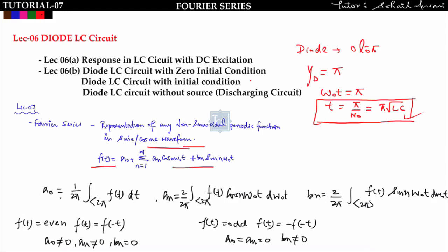The coefficients are given as: a_naught = (1/2π) × integral over 2π of f(t) dt; a_n = (2/2π) × integral over 2π of f(t) cos(n·ω₀·t) d(ω₀·t); and b_n = (2/2π) × integral over 2π of f(t) sin(n·ω₀·t) d(ω₀·t).